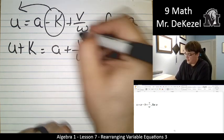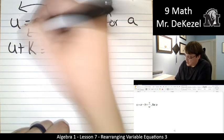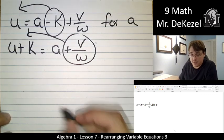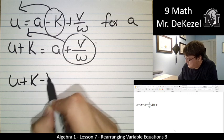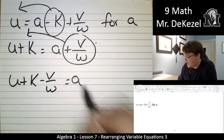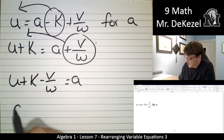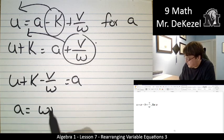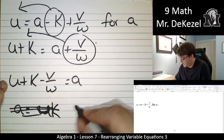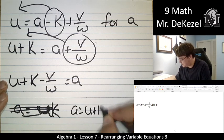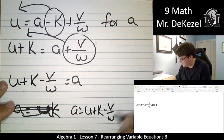And then these two terms are also just added to a. So we can take them and move them to the other side. And they become negative when they go across the equal sign. So u plus k minus v over w is equal to a. And our last step is to flip it around. So the variable that we're solving for, this is a u. This is a k. Oh my goodness. I'll write it over here. A is equal to u plus k minus v over w.